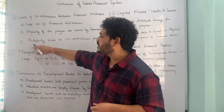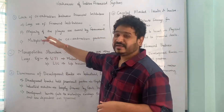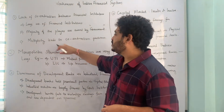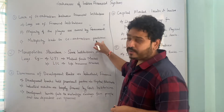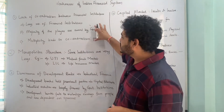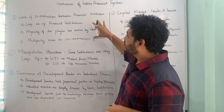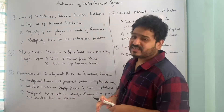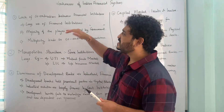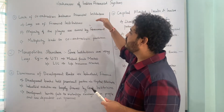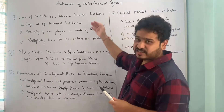Furthermore, multiplicity or abundance of institutions also leads to what is called a coordination problem. This is one of the limitations or weaknesses of the Indian financial system — the lack of coordination between financial institutions.